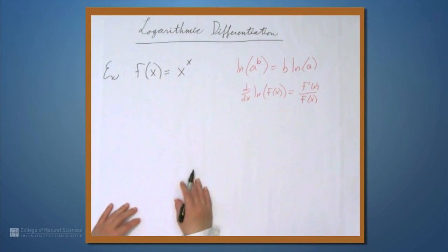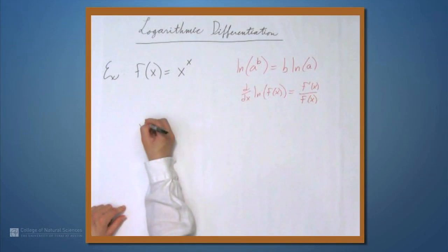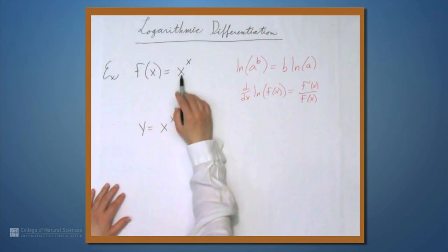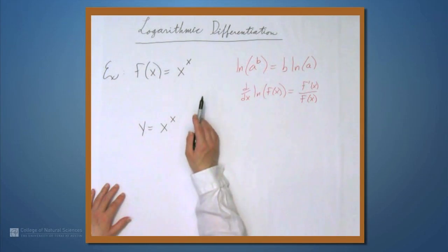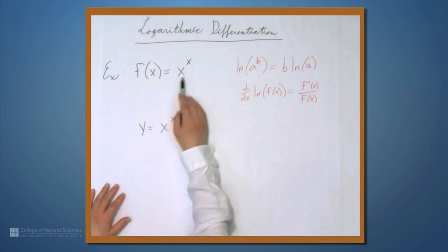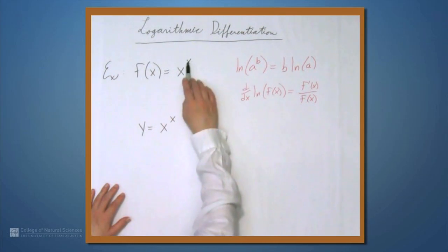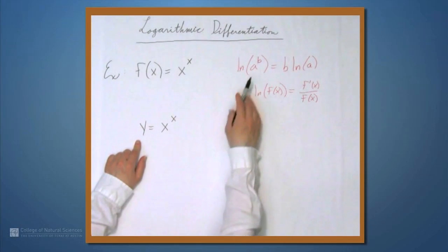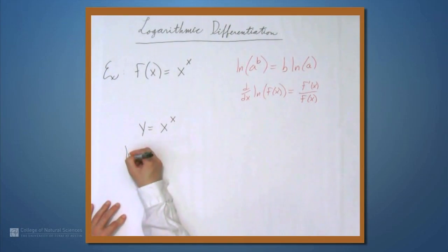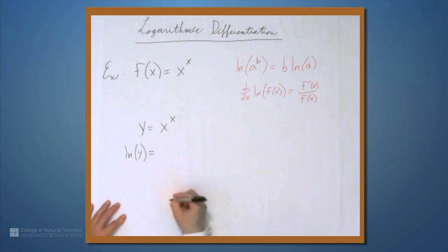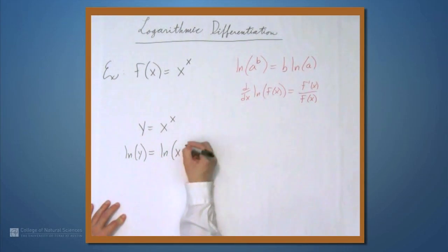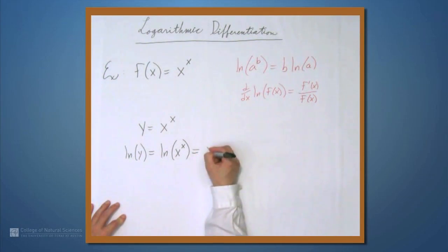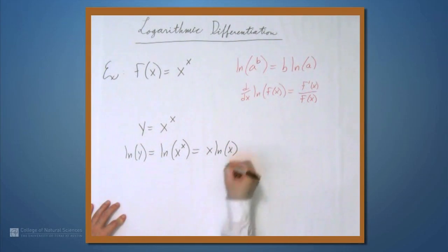Let's see what we can do here. I'm going to write this as y equals x to the x. The problem is this isn't a polynomial because it has an x in the exponent, and it's not an exponential because it has an x in the base also. But we can use this to bring the x from the exponent down to the same level. So we have y equals x to the x — let's take the natural log of both sides. On the left we get natural log of y, and on the right we get the natural log of x to the x, which by this identity is x times the natural log of x.